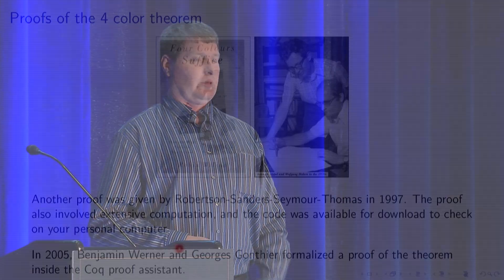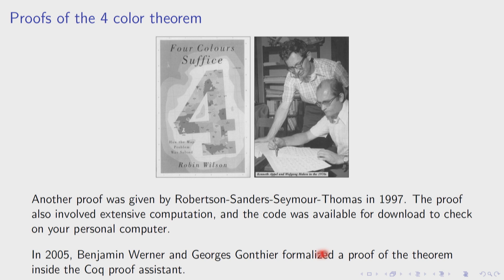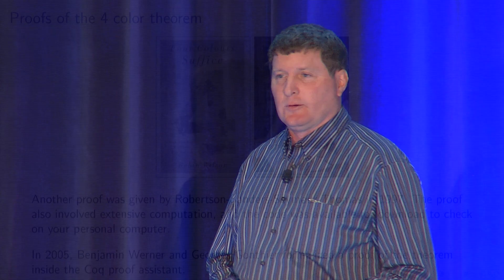Even more reliable, in 2005 Benjamin Werner and Georges Gonthier formalized a proof of the theorem inside the Coq proof assistant. Nowadays we have software for checking proofs to make sure the proof is logically complete and that every step follows logically from the previous one. They went through the entire proof of the four-color theorem, and you can run it on your own system as well. It's as reliable as the Coq proof assistant, which has been used to check many theorems and algorithms across the sciences.